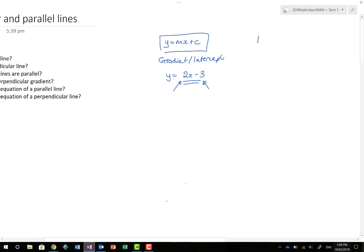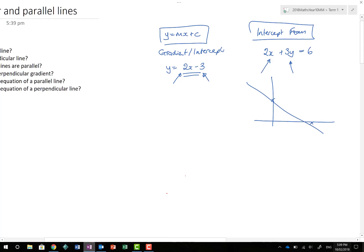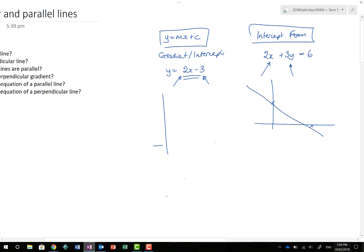A different way is the intercept form. 2x plus 3y equals 6 may for example be a line written in intercept form. It's written this way because we can find the x-axis and y-intercepts really easily from this particular equation. Gradient intercept is also nice, so long as we know the intercept and gradient to draw our sketches.